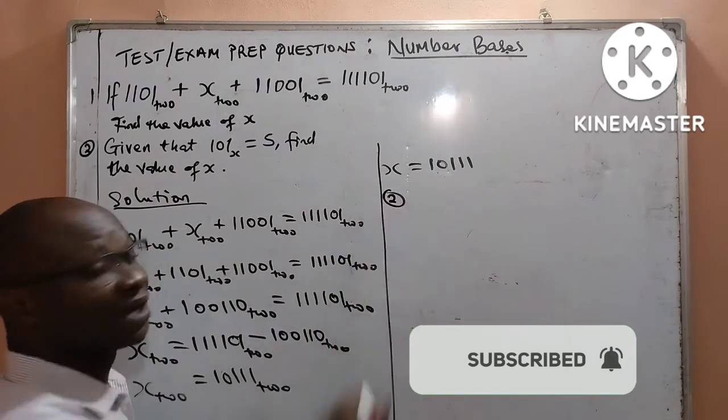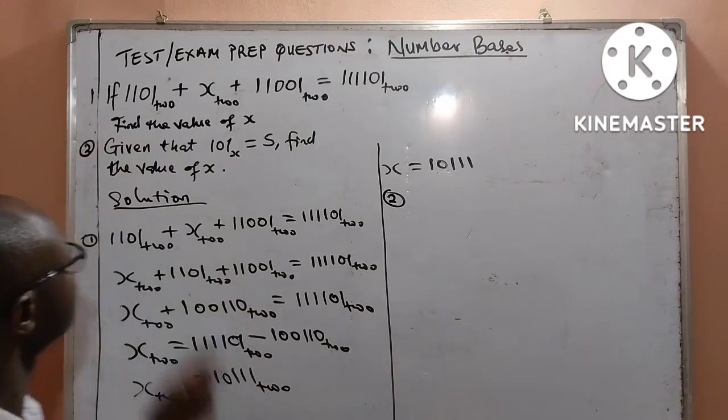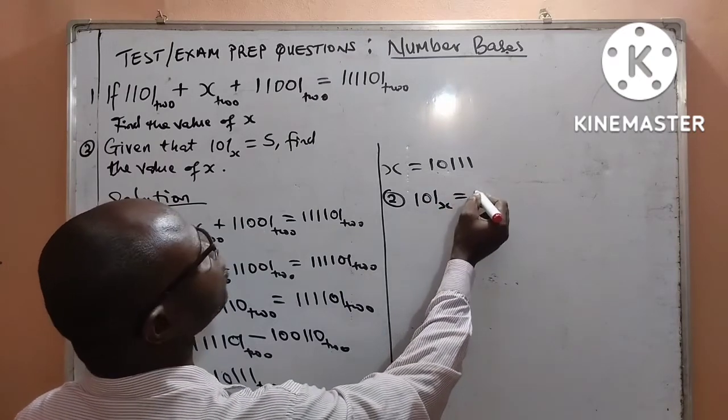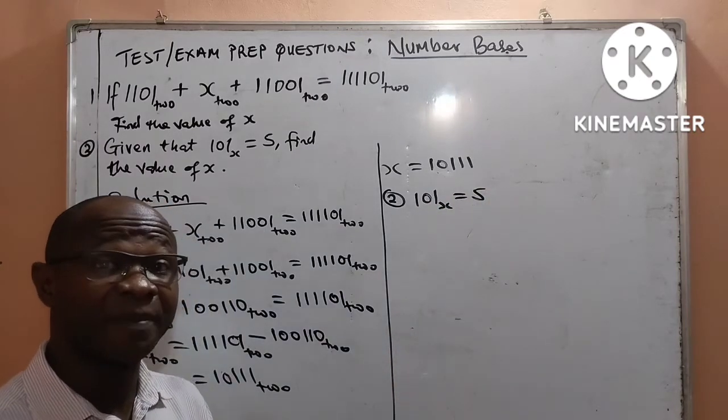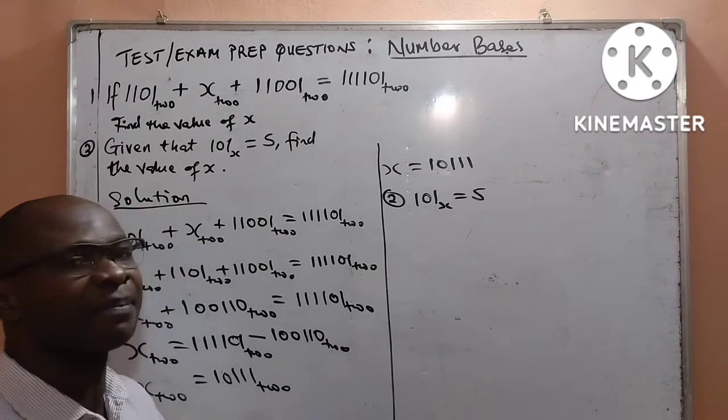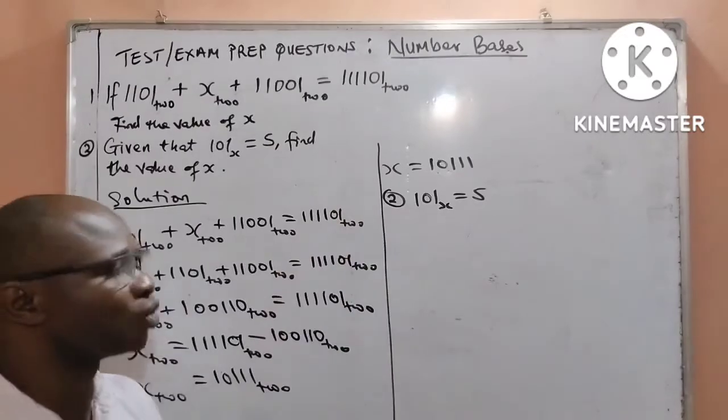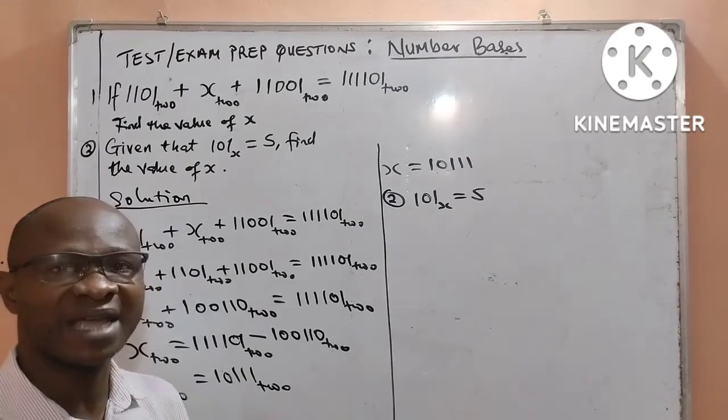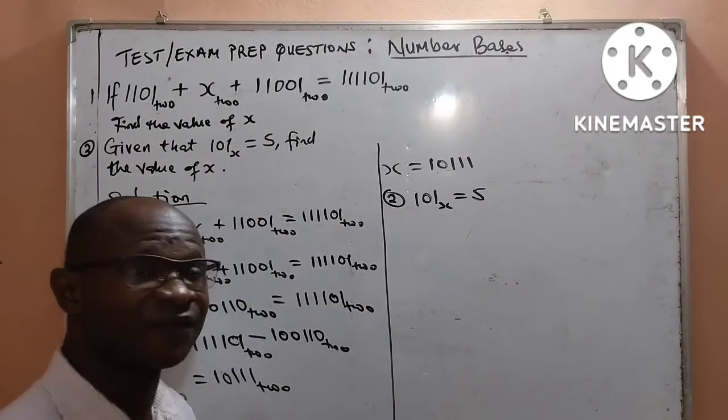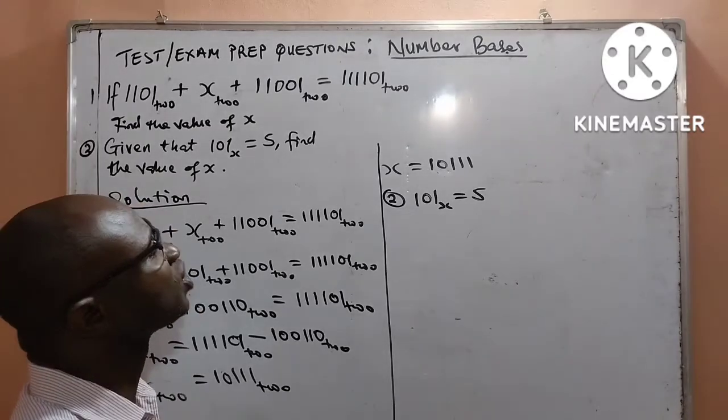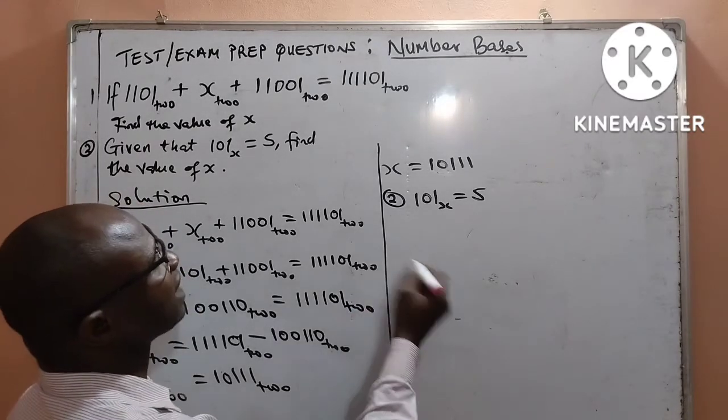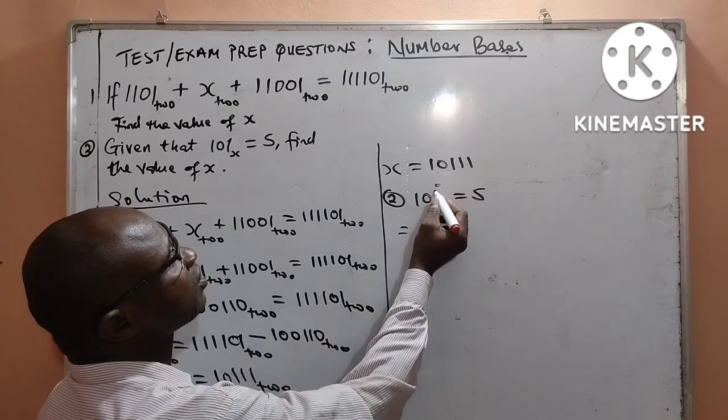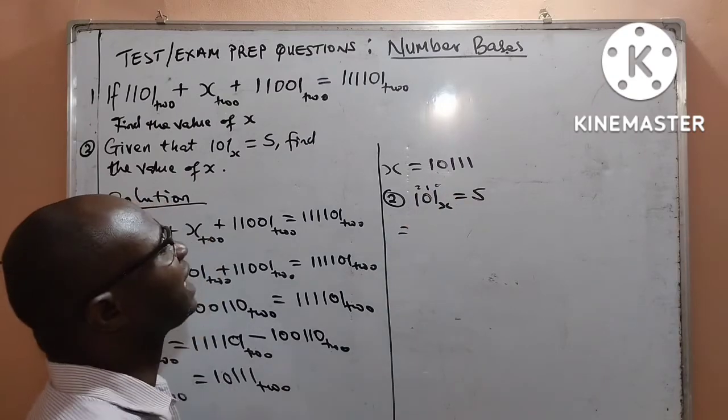In this maybe 2 minutes, let us solve question number 2. This one is not going to take our time. So I now have 101 base x giving to me equal to 5. 5 is not in any base. Therefore, it is in the natural base, which is base 10. I will go straight to the left-hand side to convert the 101 base x to base 10. And to do that, if you watched the other video, you see where also, I showed us how to convert numbers to base 10.